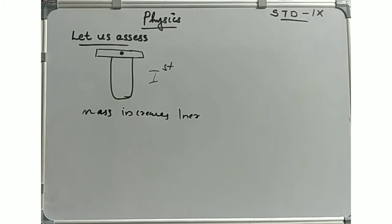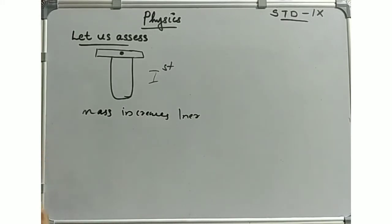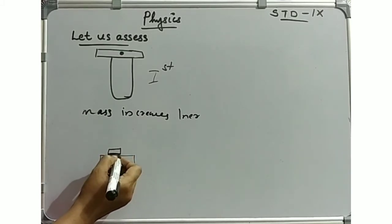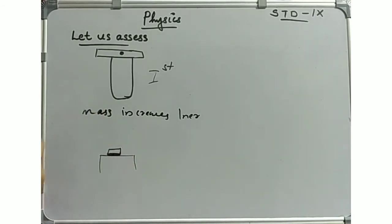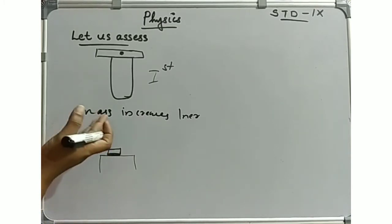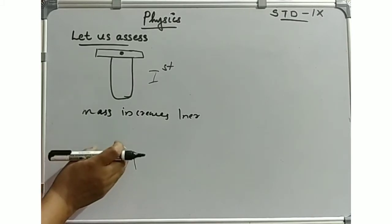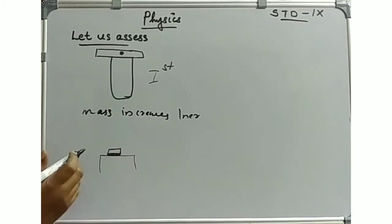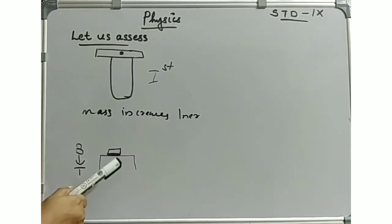What are the balanced forces that act on a book at rest on a table? On the table, we have a textbook. The book exerts a force on the table in the downward direction. The table exerts a force on the book in the upward direction. These are the two forces acting.